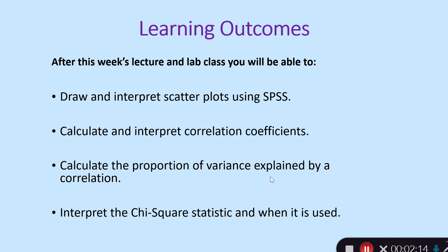Hopefully a lot of this is revision that many of you will have encountered before, and this should refresh your memories or deepen your understanding. Learning outcomes: after this week's lecture and lab class you should be able to draw and interpret scatter plots using SPSS, calculate and interpret correlation coefficients, calculate the proportion of variance explained by a correlation, and interpret the chi-square statistic and when it is used.